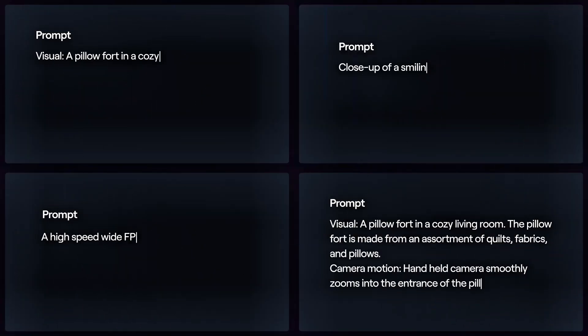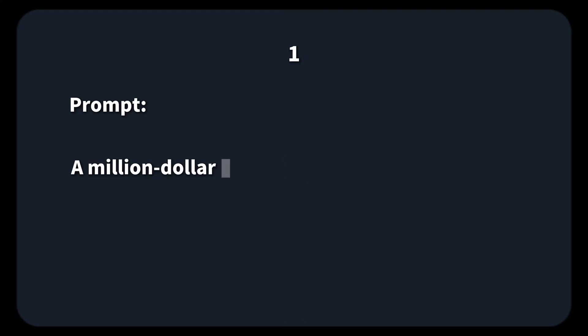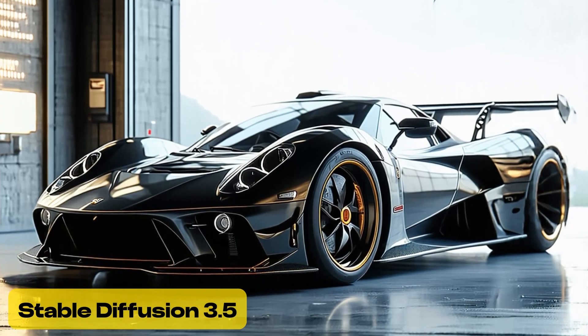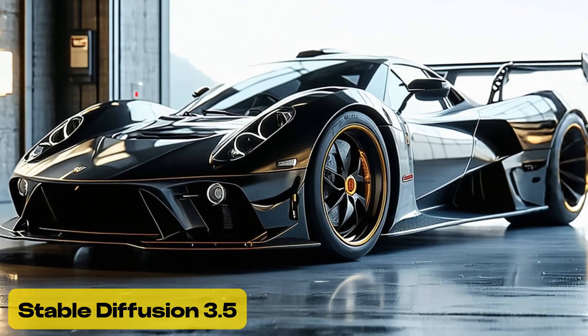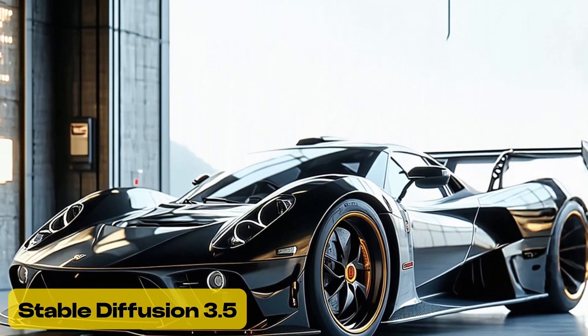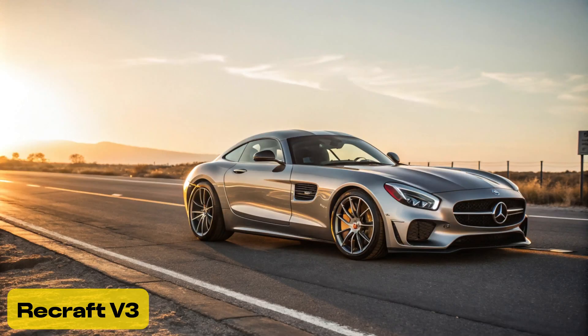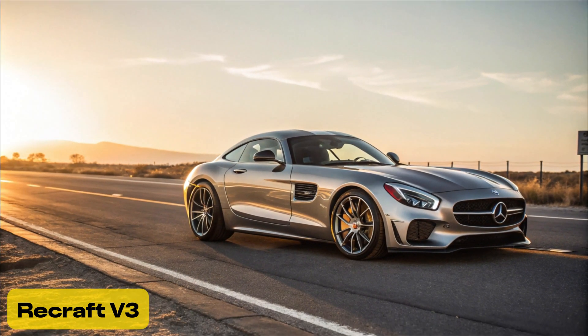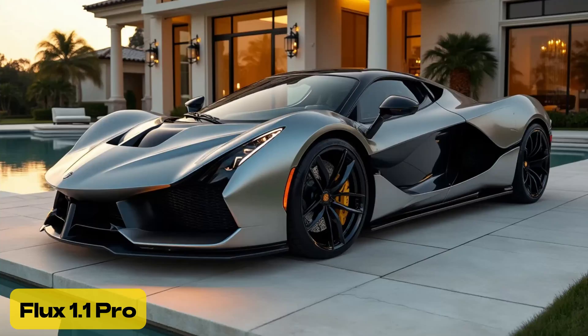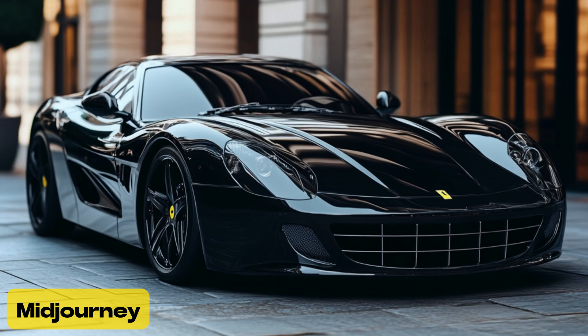Next, we'll test these tools using six different prompts to see how they perform. Prompt: a million-dollar sports car. Stable Diffusion 3.5 captures the overall silhouette of the car beautifully, with impressive reflections on the ground and lighting on the car's surface. However, the upper part feels a bit too empty, so the result is decent but could be more balanced. ReCraft V3 shines with an incredible rendering of the surroundings — if I didn't tell you it was AI-generated, you'd likely think it was a real photo. Flux 1.1 Pro is definitely my favorite for this prompt, bringing out incredibly detailed textures on the car's body, making it look exceptionally cool. MidJourney took a more creative approach, depicting a surreal sports car scene on a city street, adding a unique twist.